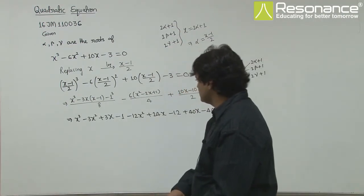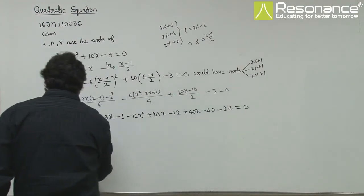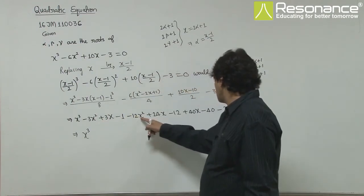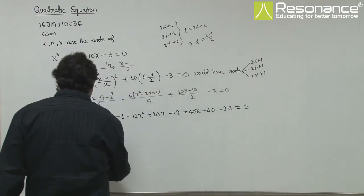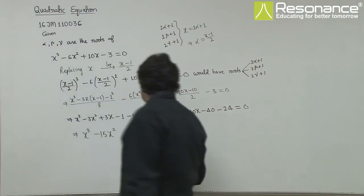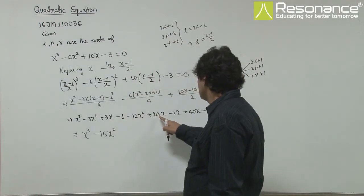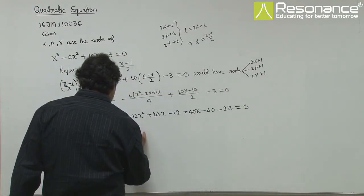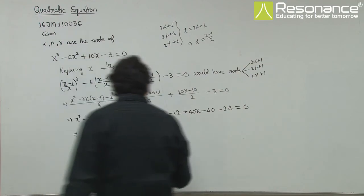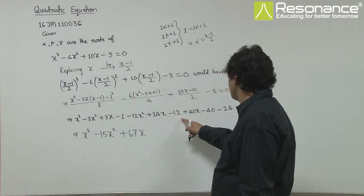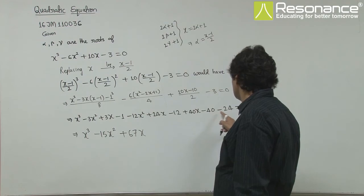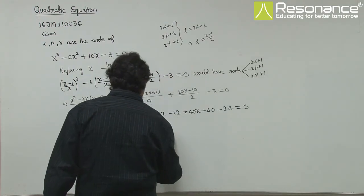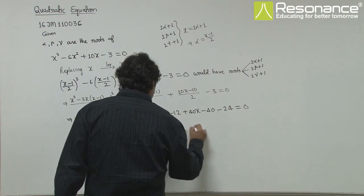So further simplify. This is x³ minus 3x² minus 12x², that is minus 15x². X terms here: 3x, 24x, 40x, so this is 64 and 3, 67x. And constant is minus 1 minus 12 minus 40 minus 24. So this is minus 64 minus 76 minus 1, minus 77.